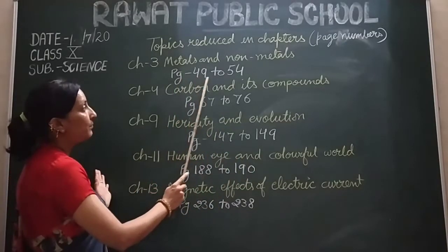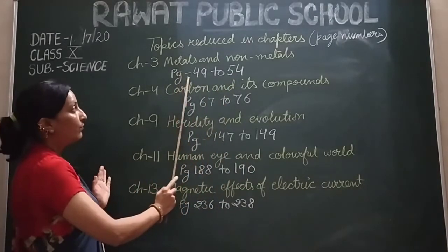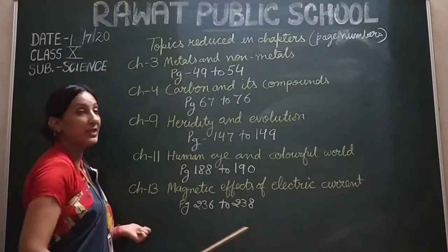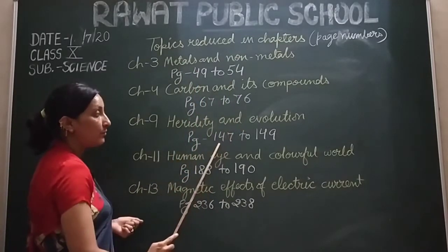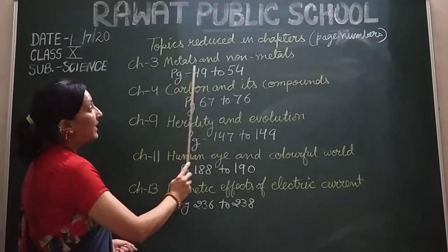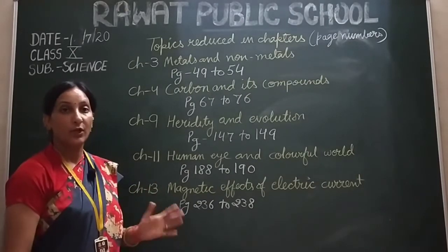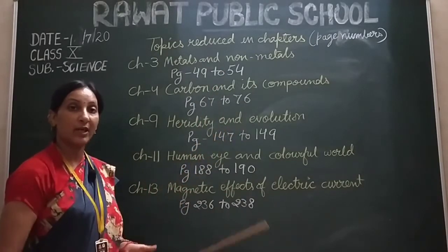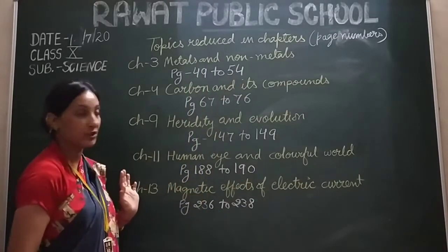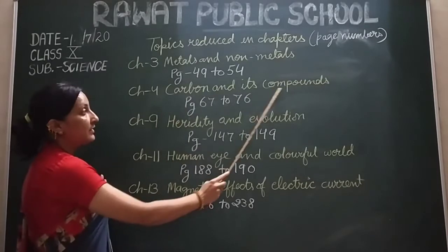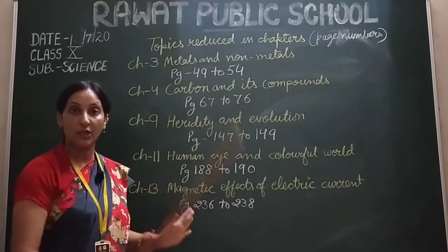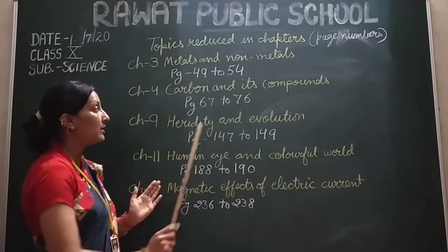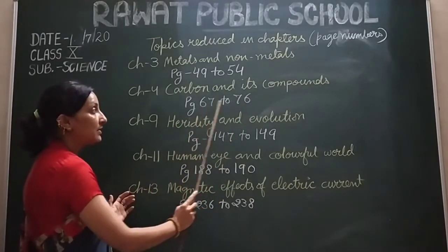For your convenience, I have mentioned the page numbers that we do not have to study. Chapter number 3, Metals and Non-Metals — the metallurgy part and corrosion methods are not to be studied: pages 49 to 54. Chapter number 4, Carbon and its Compounds — the homologous series, nomenclature of carbon compounds, and related parts on pages 67 to 76 do not need to be read.